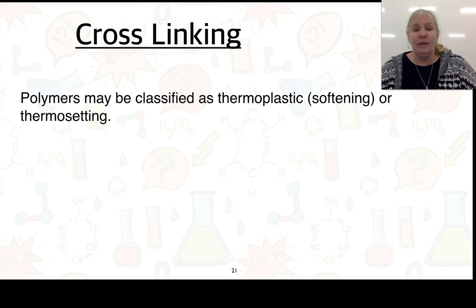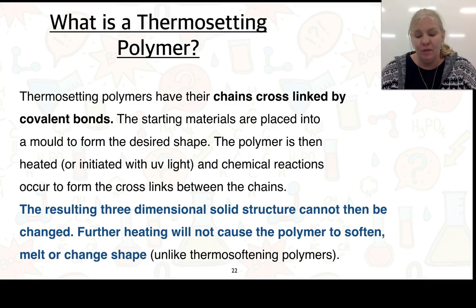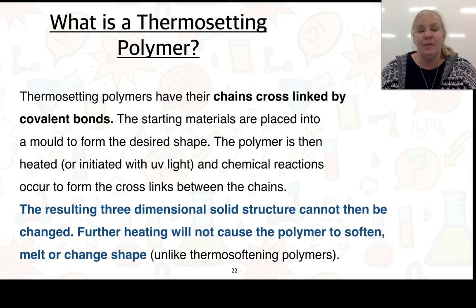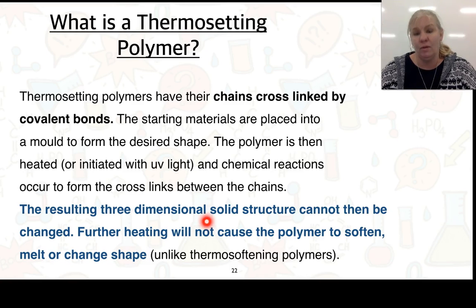When looking at cross-linking, we consider two different types of polymers: thermoplastic (also called thermosoftening) and thermosetting. In a thermosetting polymer, chains are cross-linked by covalent bonds between chains. The starting materials are put into a mould, then heated and initiated with UV light, causing chemical reactions to form cross-links. The resulting three-dimensional solid structure cannot be changed — further heating will not cause it to soften, melt, or change shape.